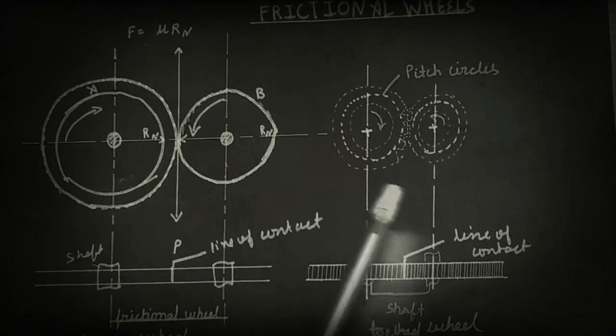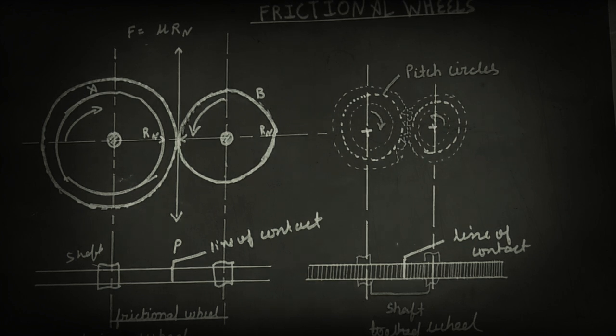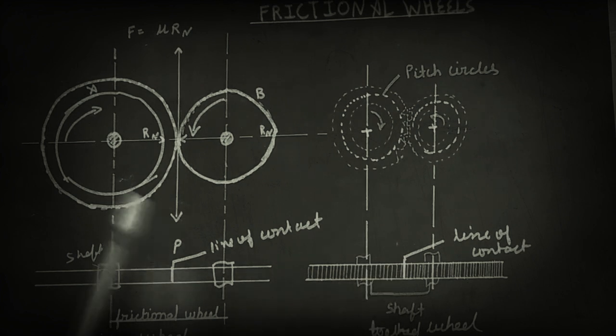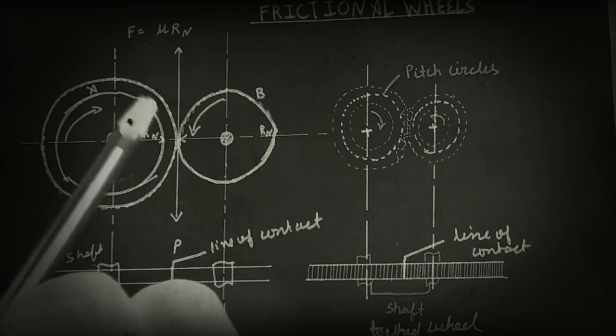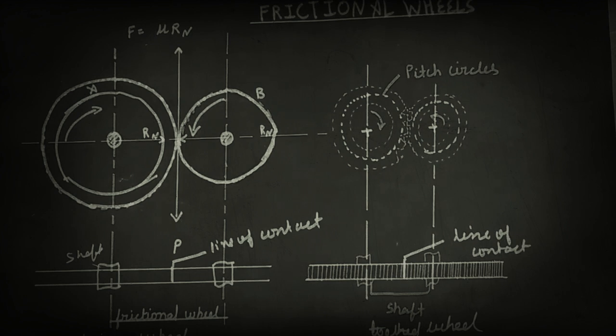In friction wheels or kinematic equilibrium wheels, there is no requirement of any teeth and shafts to transmit the motions, but they transmit very less amount of power compared to the teeth wheel.